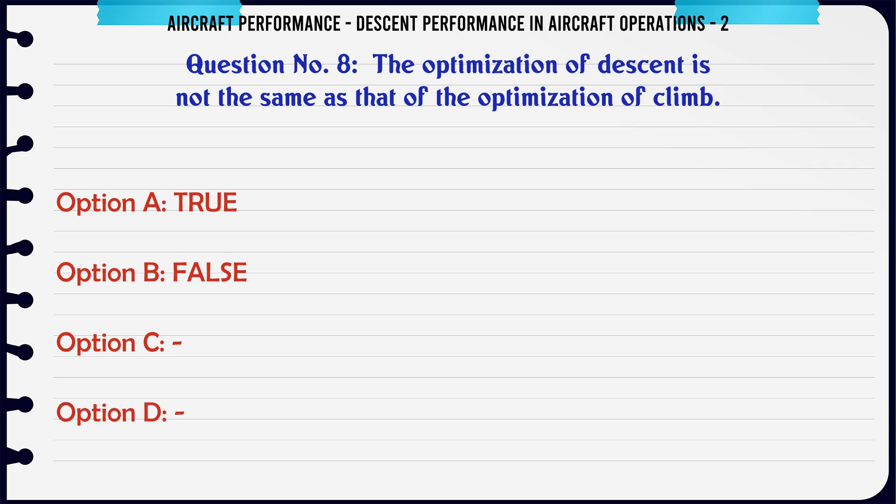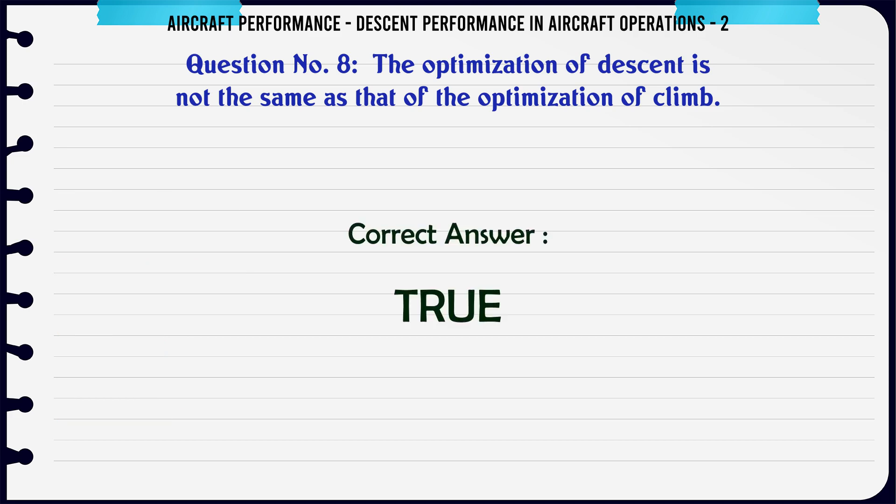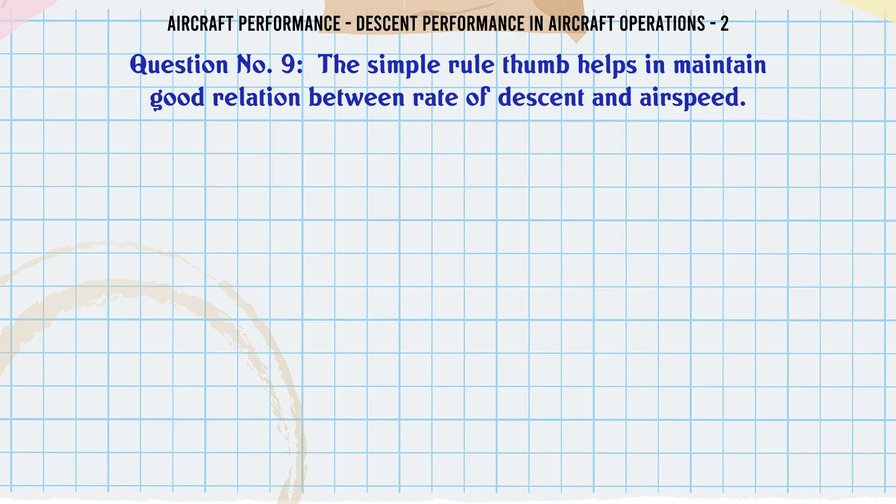The optimization of descent is not the same as that of the optimization of climb. a) True, b) False. The correct answer is true. The simple rule of thumb helps in maintaining a good relation.